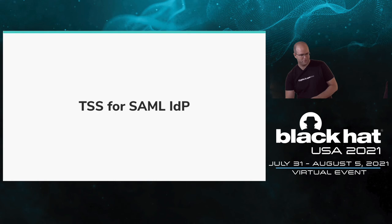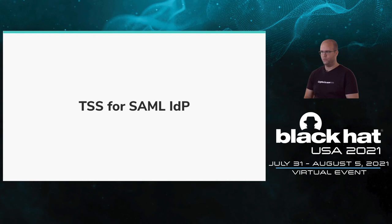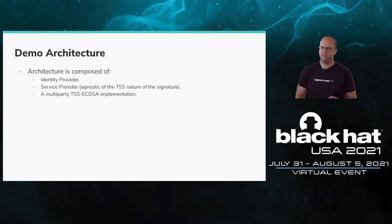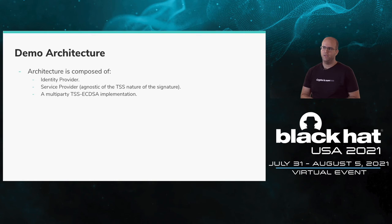Thank you Tal for introducing the problem and solution. What I'd like to do next is present the actual demo that implements the suggested solution. The demo architecture is composed of three parts: the identity provider, the service provider — which is agnostic to the TSS nature of the signature — and our implementation of the threshold signature for the EC-DSA signature.